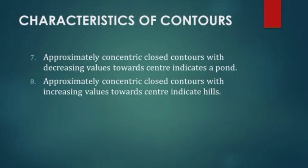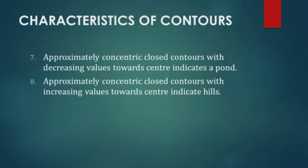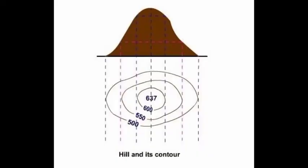Characteristic 7: approximately concentric closed contours with decreasing values towards the center indicates a pond. As in this diagram, they are concentric circles closing and their values decrease towards the center. Characteristic 8: approximately concentric closed contours with increasing values towards the center indicates hills. The values are increasing towards the center — same structure as a pond, just values increasing instead of decreasing.